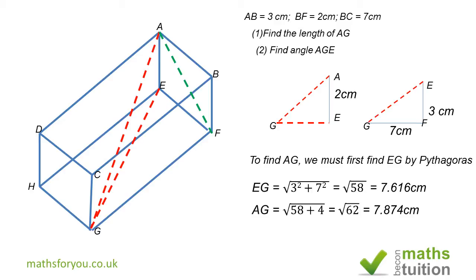Now to find angle AGE, which is this one here. We know AE and we know AG, so we need to use the tan ratio. The inverse tan of 2 divided by 7.616 is 14.71 degrees, to 4 significant figures, and that is the answer to question 2.